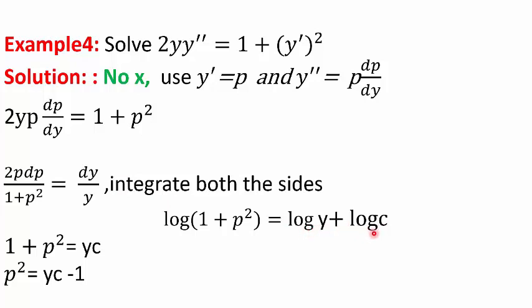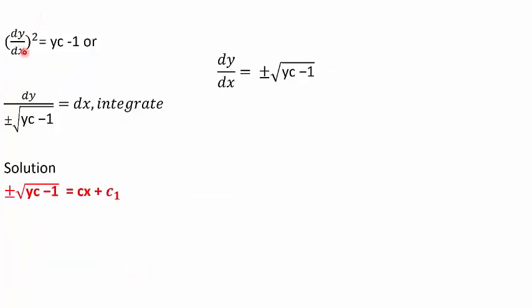Taking the exponential: 1 + p² = yc. Bringing the 1 to the right: p² = yc − 1. Since p = dy/dx, we get (dy/dx)² = yc − 1. Taking the square root: dy/dx = ±√(yc − 1). Separating variables and integrating, the solution is ±√(yc − 1) = cx + c₁.